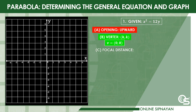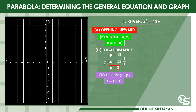Next is the focal distance. From the given standard formula, 4p = 12. Simplifying using the multiplication property of equality, we get p = 3. Next is the focus. From summary table number 1, we substitute the focal distance into (0, p), so the focus is at (0, 3). From summary table number 1, the directrix is y = −p. Substituting the focal distance, we get the directrix at y = −3.